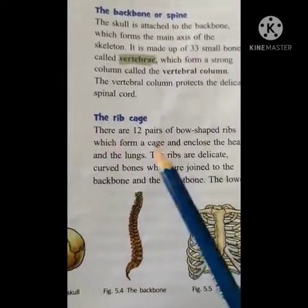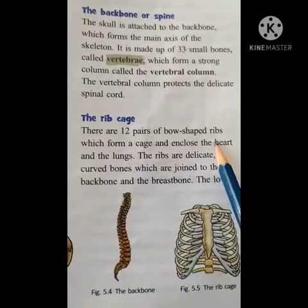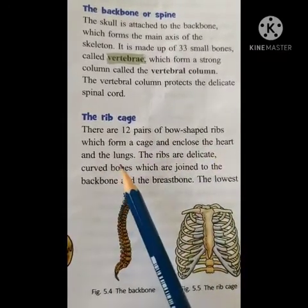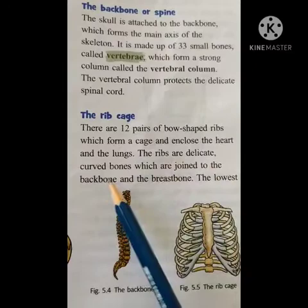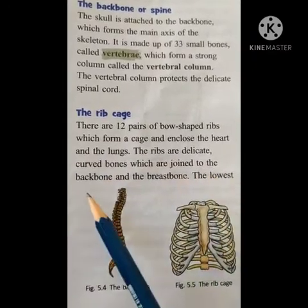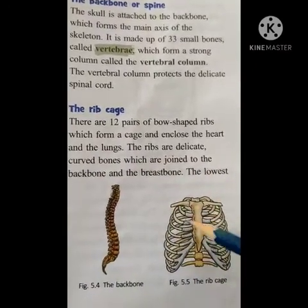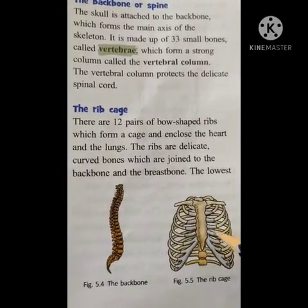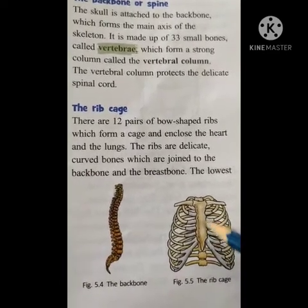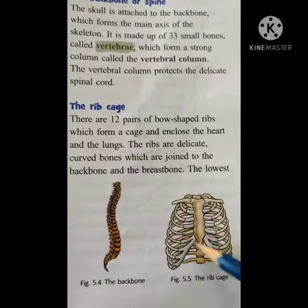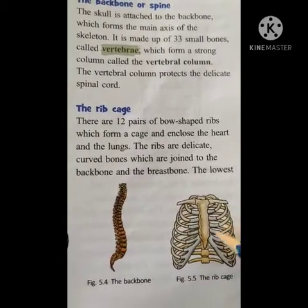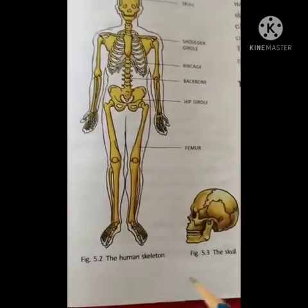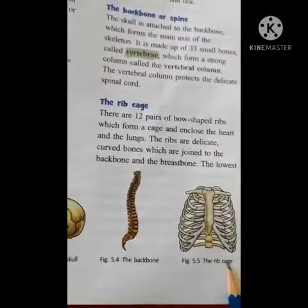Next one is the rib cage. There are 12 pairs of bow-shaped ribs which form a cage and enclose the heart and lungs. The ribs are delicate curved bones which are joined to the backbone and the breast bone. The lowest ones are called floating bones. These are bow-shaped ribs and they are protecting the lungs. I hope you have understood the skeleton, skull, backbone and the rib cage.